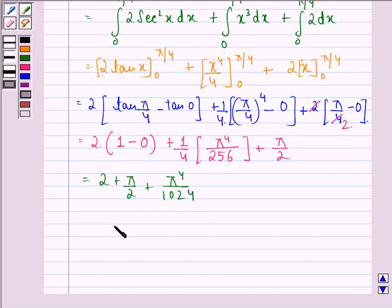So our answer to this question is pi raised to power 4 divided by 1024, plus pi by 2, plus 2.